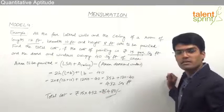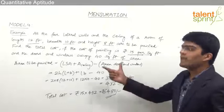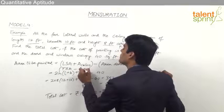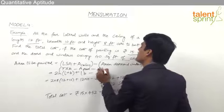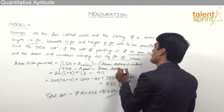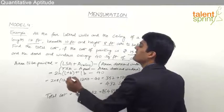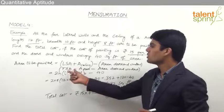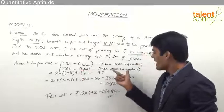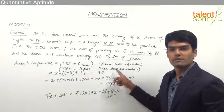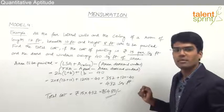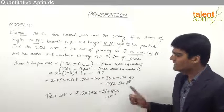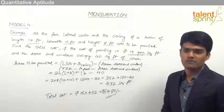So Rs 6480 is the answer for the given question. As mentioned earlier, the area to be painted can also be taken as the total surface area minus the area of the floor minus the area of doors and windows, because both of these are not painted. Either approach — lateral surface area plus ceiling minus doors and windows, or total surface area minus floor minus doors and windows — gives the same answer of 432 square feet, and multiplying by Rs 15 gives the total cost.